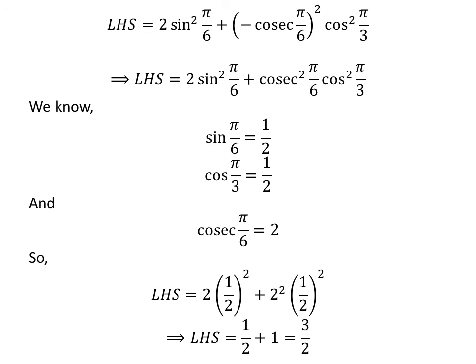Cancelling out the common factors in the numerator and denominator gives us the left-hand side equal to half plus 1, which is equal to 3 upon 2. As 3 upon 2 is the right-hand side of the given equation, we have proved the given equation.